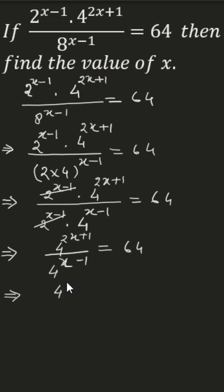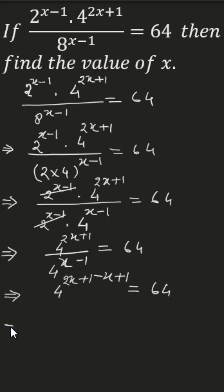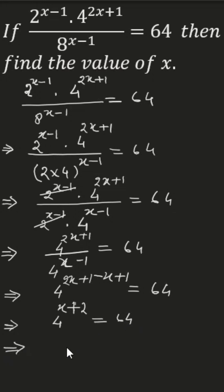Applying the quotient rule, we subtract the exponent of the denominator from the exponent of the numerator: (2x plus 1) minus (x minus 1) equals x plus 2. So we have 4 to the power (x plus 2) equal to 64.